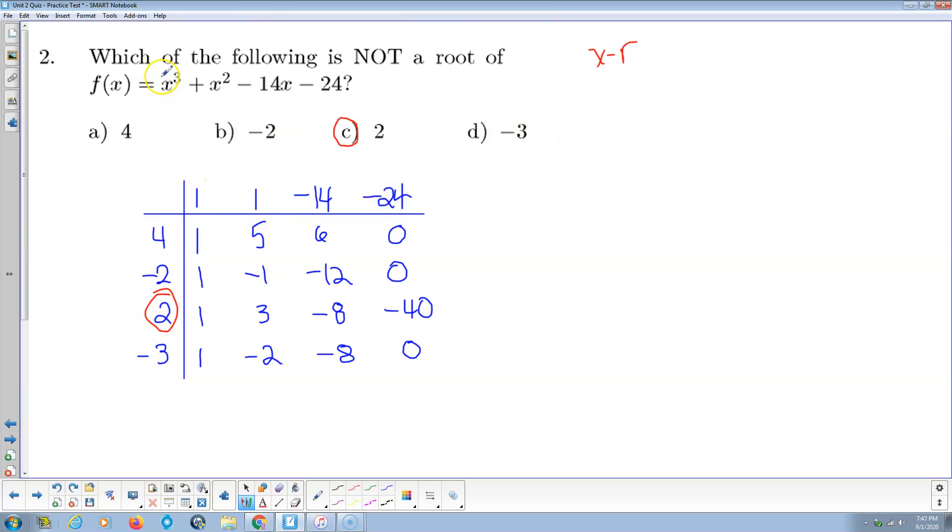So there's my coefficients. 1, 1, negative 14, negative 24. And I'm going to divide each of these: 4, negative 2, 2, and 3. So we bring the 1 down. 4 times 1 is 4. Plus 1 is 5. 4 times 5 is 20. Minus 14 is 6. 4 times 6 is 24. Minus 24 is 0. That says this guy is a root. And we're looking for the one that's not a root. So not the correct answer.